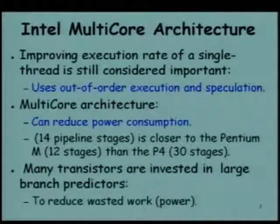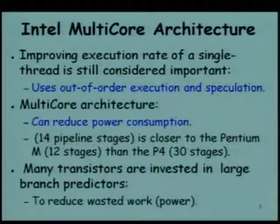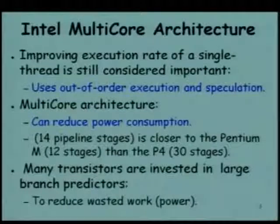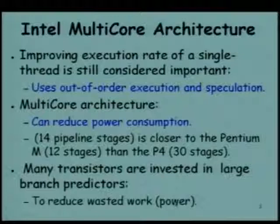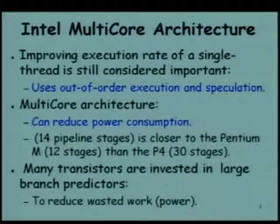Each core is basically a simpler computer compared to a single processor. It uses a simpler pipeline — 14 pipeline stages compared to the Pentium 4 which had 30 stages. Also, to reduce wasted work and in turn power, many transistors are invested in large branch predictors. The branch predictor algorithms have become more sophisticated to reduce wastage due to mispredictions.